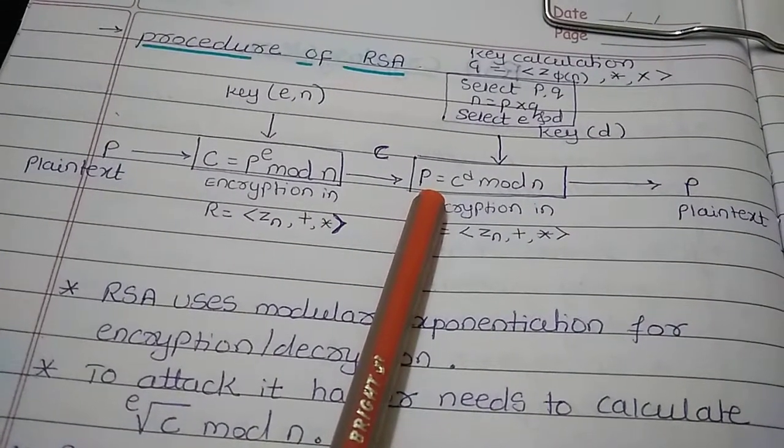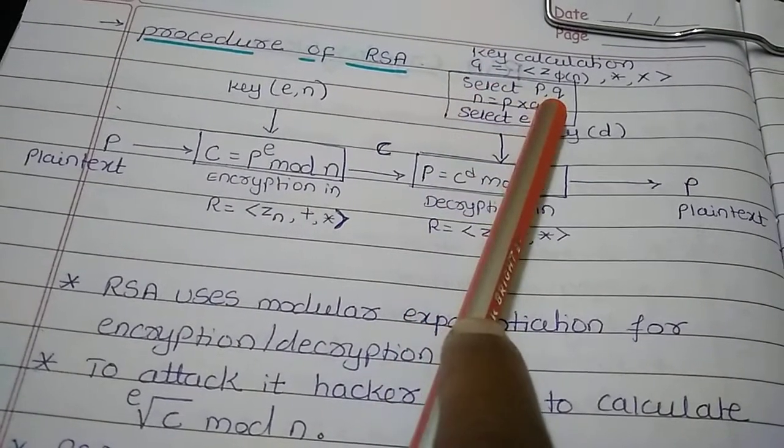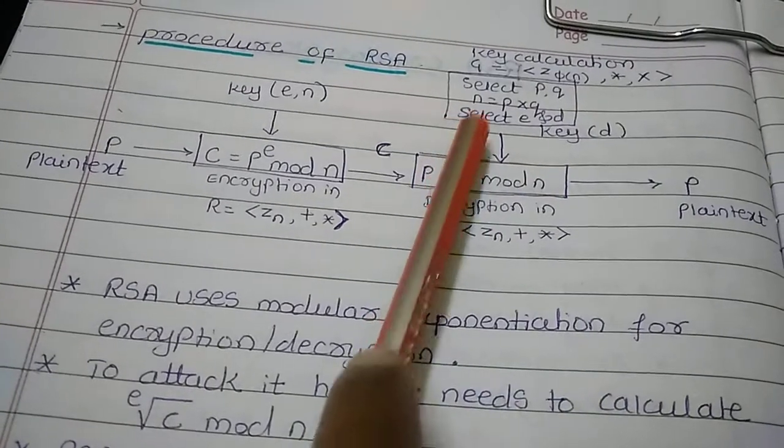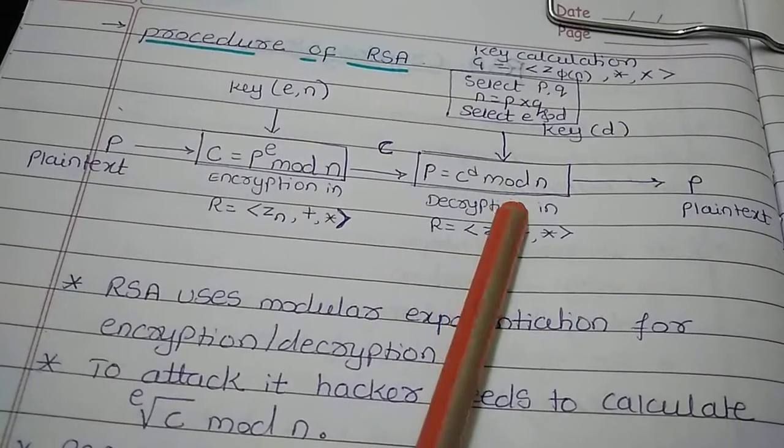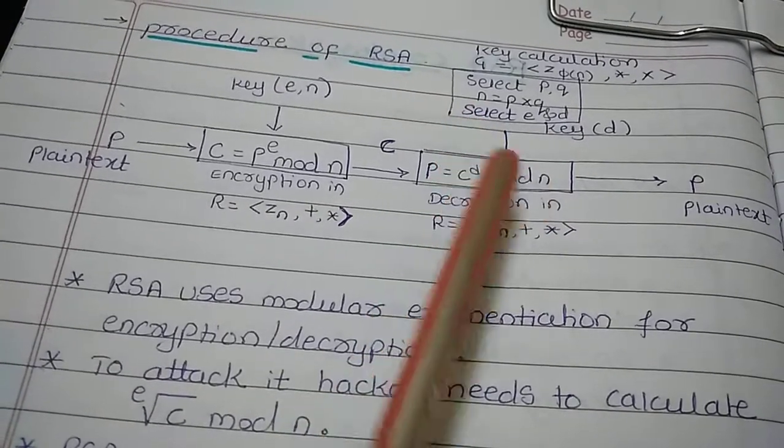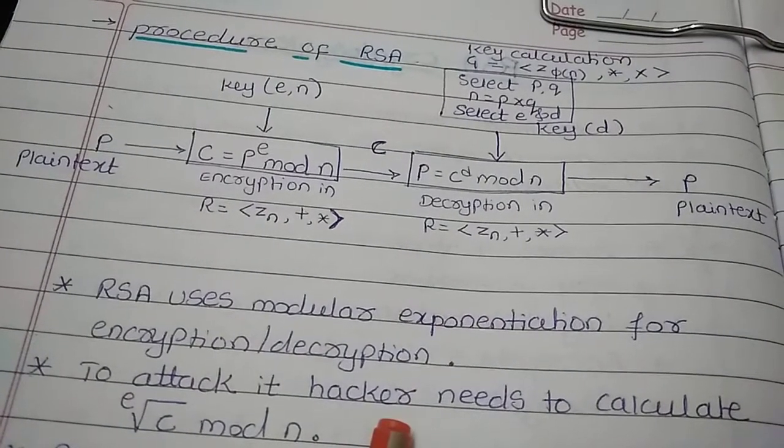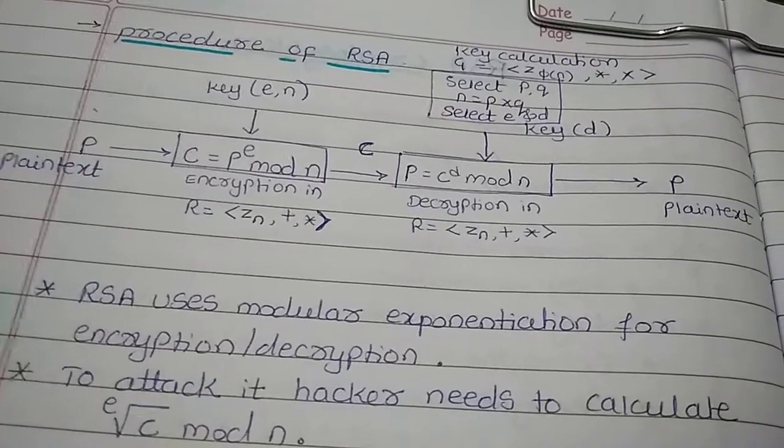When decrypting, we calculate the key from the group G which is a set of integers with multiplication operation. We need to select the value of P and Q such that the multiplication of P and Q gives the value of N, then select the value of E and D which is public and private key.